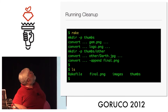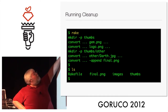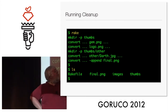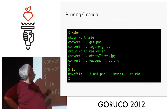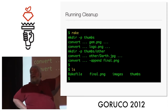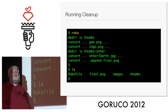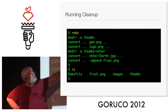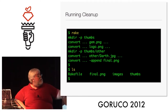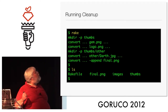Let's run it. Rake builds the thumbs directory, converts the gem and logo file in the top level. Then we hit the 'darth' file — this is an awesome testing picture of Darth Vader — and when we hit this one, it says 'this has a dependency upon the thumbs/other directory, so I have to make that directory first,' then it converts the file, appends them all to final.png, and we're done. If we look, we see it did create the thumbs directory with the nested structure.